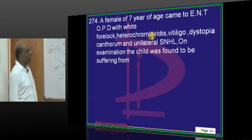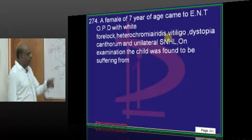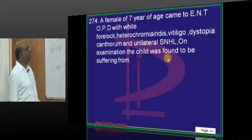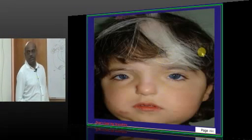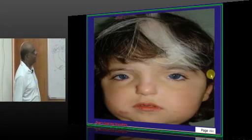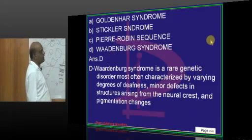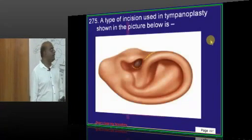Now a seven-year-old comes with heterochromia, vitiligo, unilateral sensorineural hearing loss, along with a white forelock of hair—which is classical of Waardenburg syndrome. One of the favorite questions.